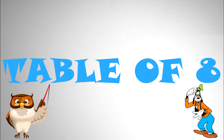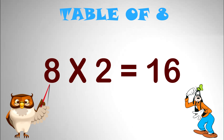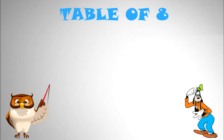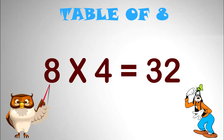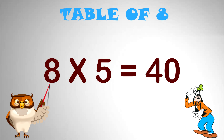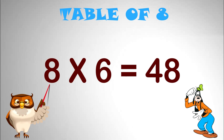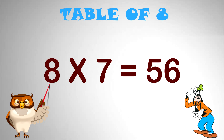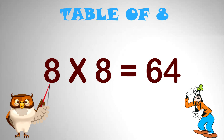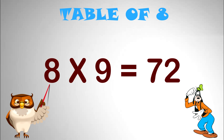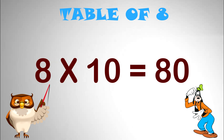Table of 8. 8 x 1 equal to 8. 8 x 2 equal to 16. 8 x 3 equal to 24. 8 x 4 equal to 32. 8 x 5 equal to 40. 8 x 6 equal to 48. 8 x 7 equal to 56. 8 x 8 equal to 64. 8 x 9 equal to 72. 8 x 10 equal to 80.